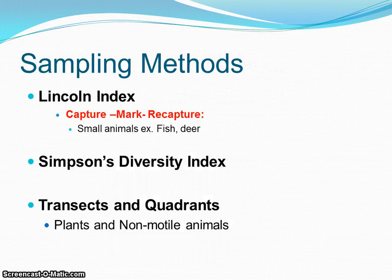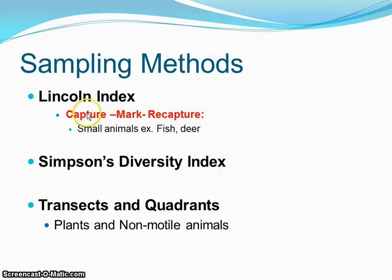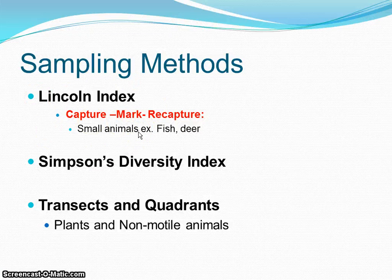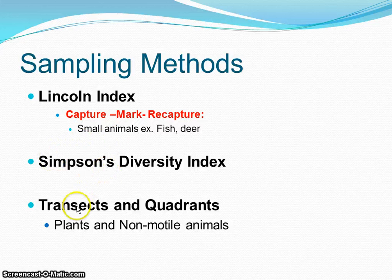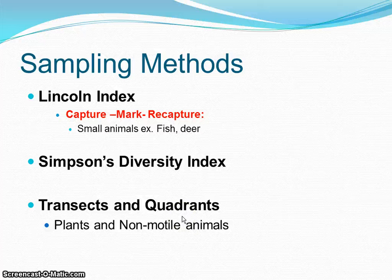We're going to focus on a couple different types of sampling methods for living things in this class. For these notes, we're going to focus on the first one — the Lincoln Index, which is about estimating population size. In the next PowerPoint, we'll talk about diversity, and we'll also talk about transects and quadrats. All of them are biotic measurements for living things.